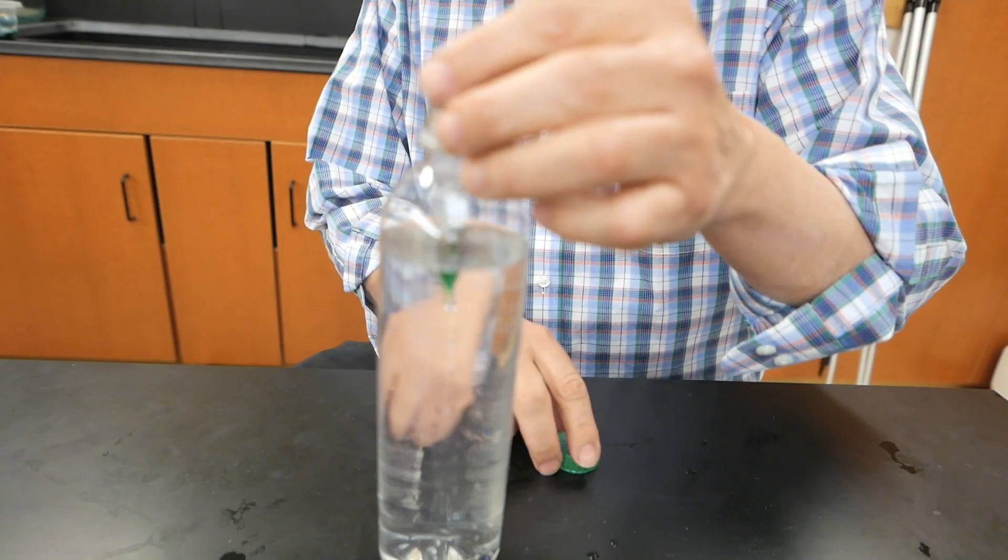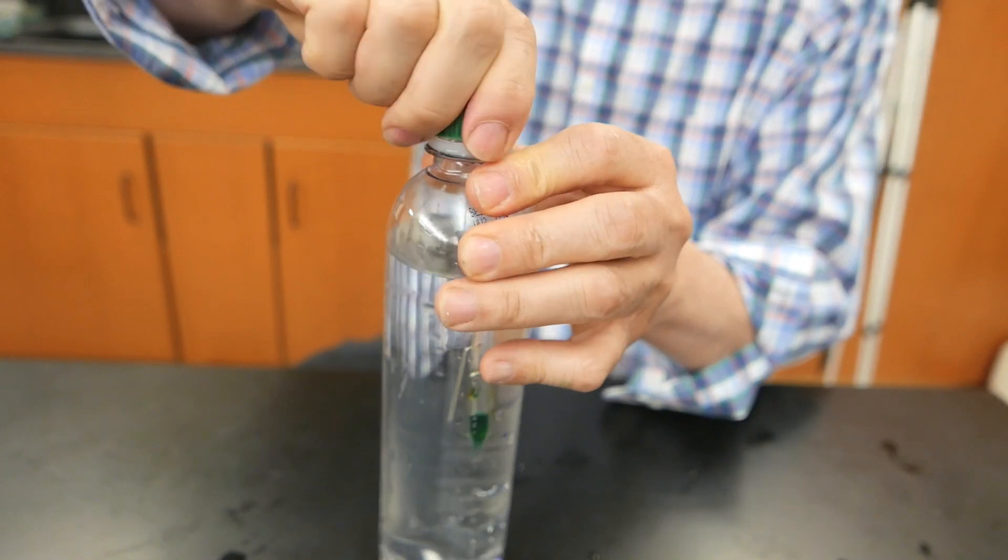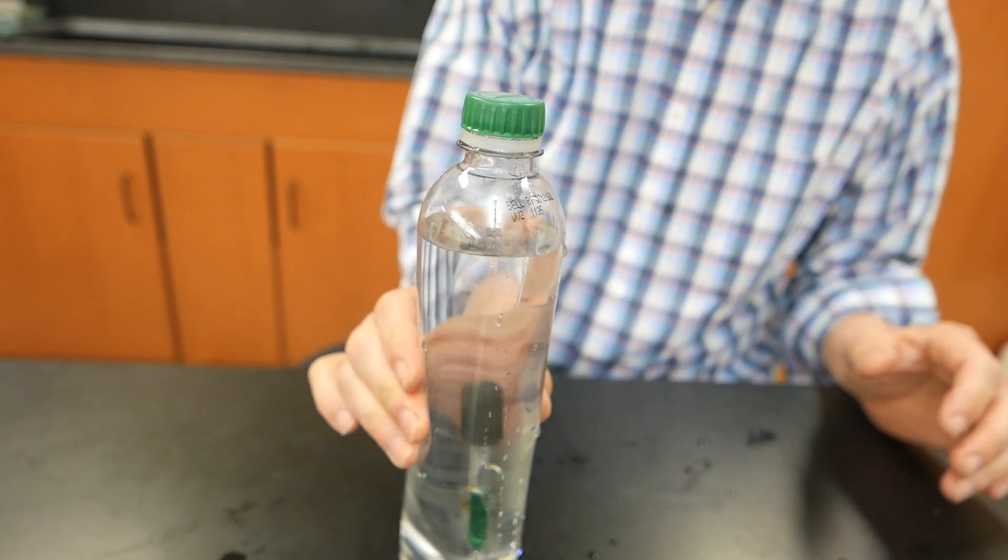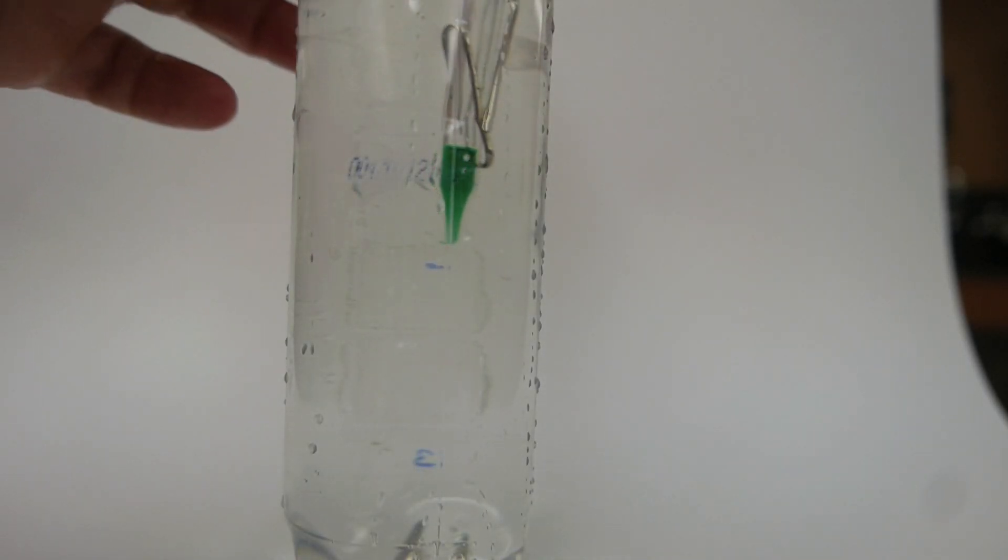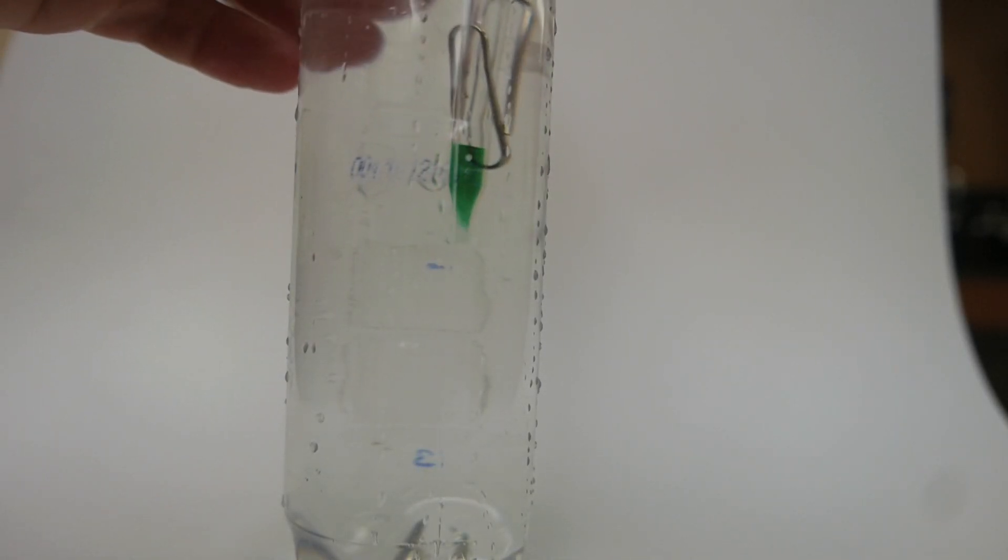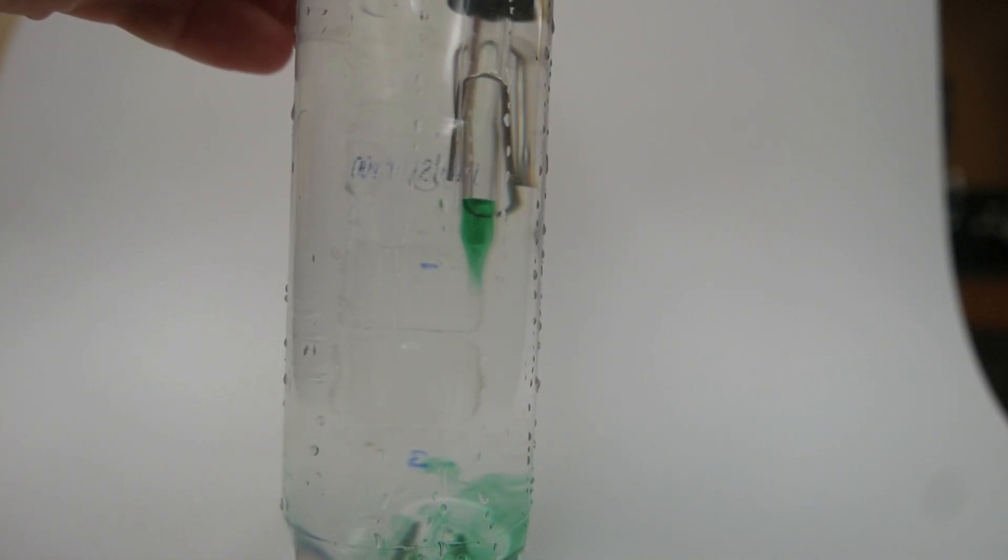The next step is to drop it into a bottle, seal it with the cap, and then squeeze. If you watch closely, you can see that when the bottle is squeezed, more liquid is forced into the dropper, making the air bubble smaller. And when it's released, the air bubble gets larger.